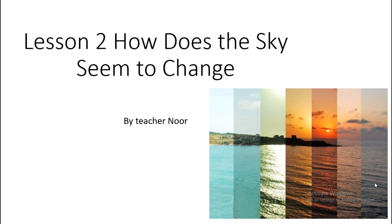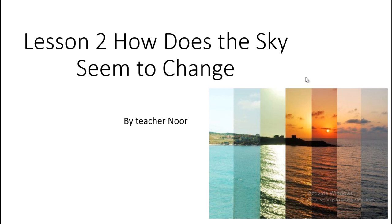Looking at this picture, it's the same place but each time is different. The photographer took the same picture of the same place at different times of the morning. In the early morning he took one picture, after one hour another, and after two hours another. You can see the Sun up in the sky — in the noon time you can see it high up.